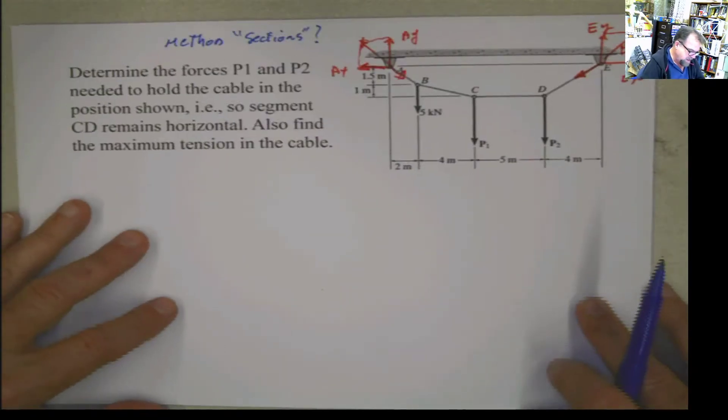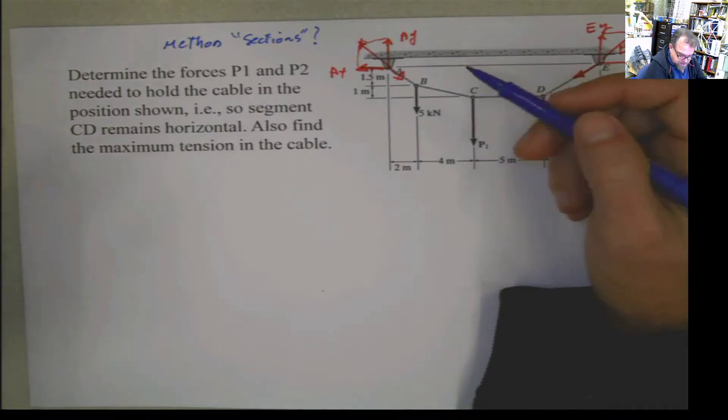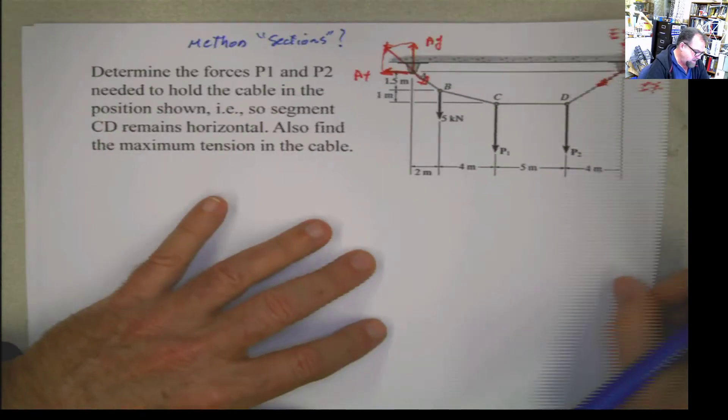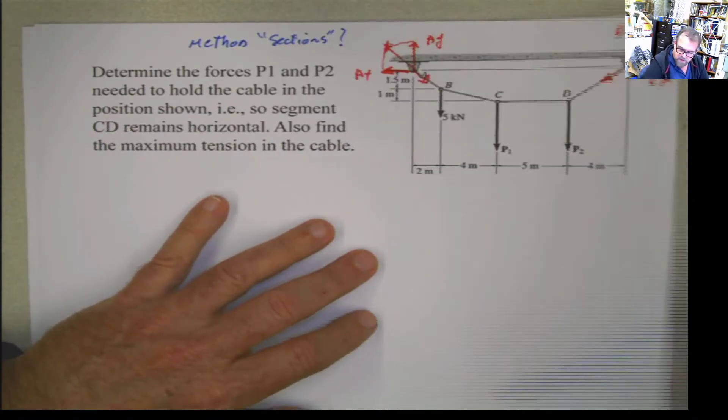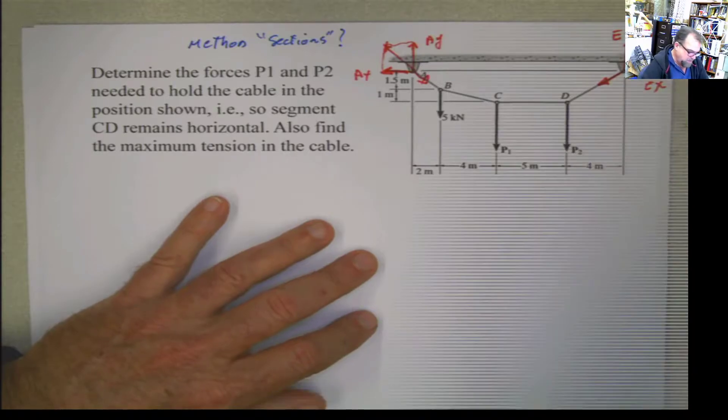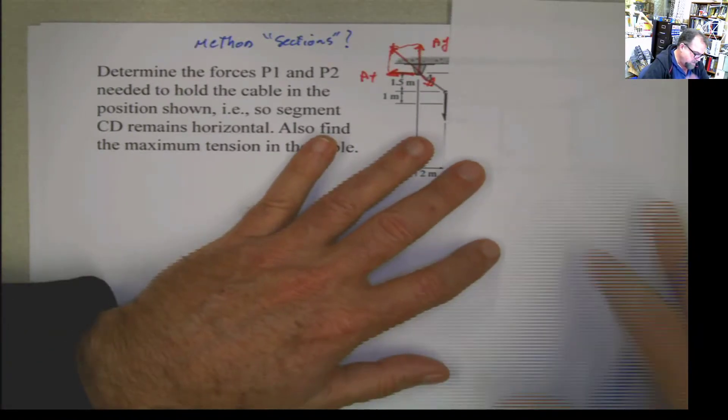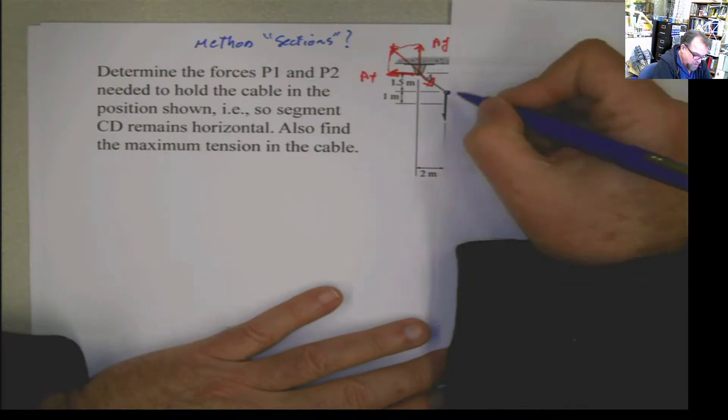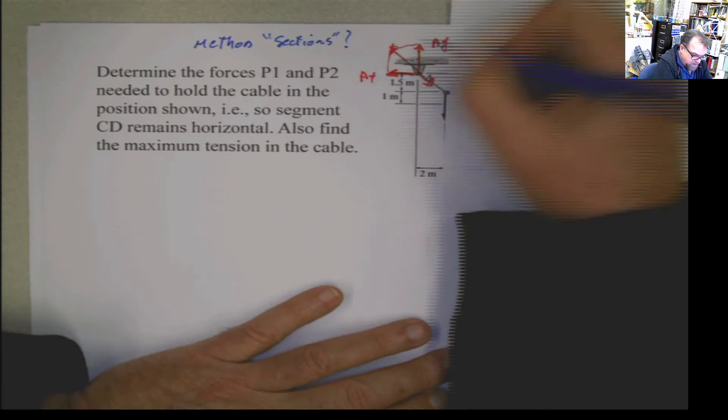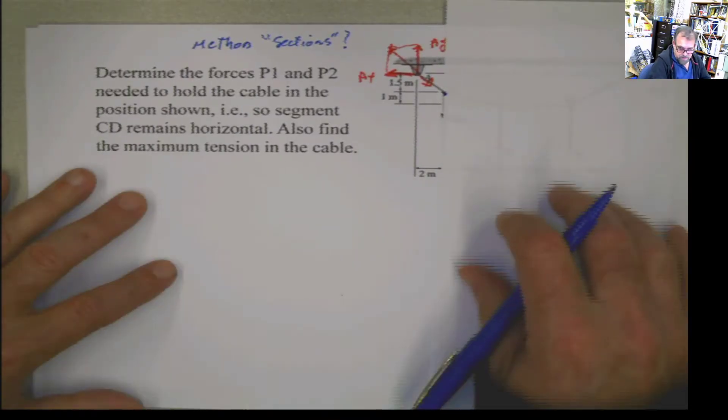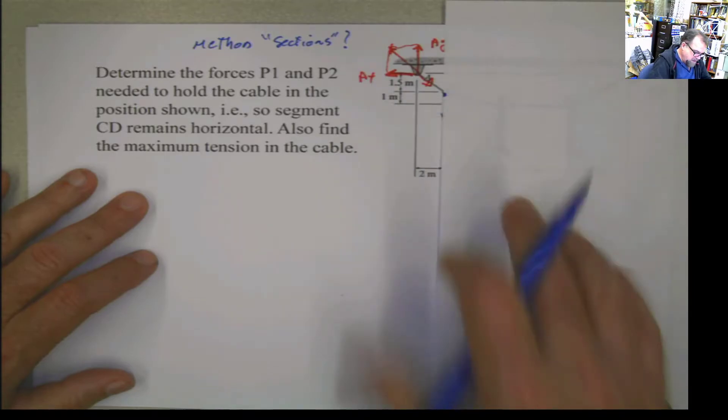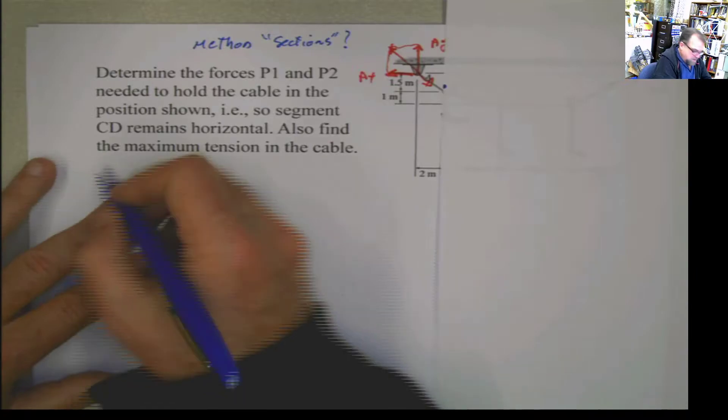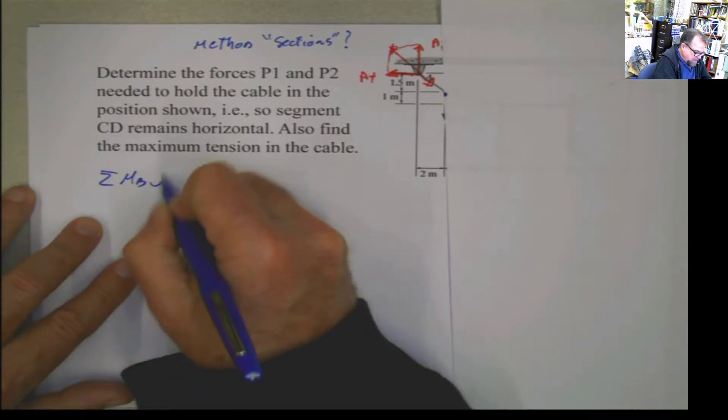The first thing that you have to realize is, what if I decided to make a section here, the same way that we did with the method of sections. I'm going to do moment with respect to that point B, but only for this part. If I do summation of moments at B...